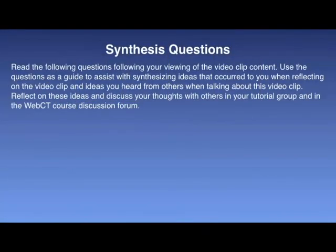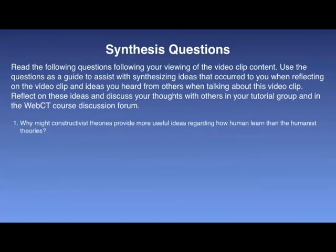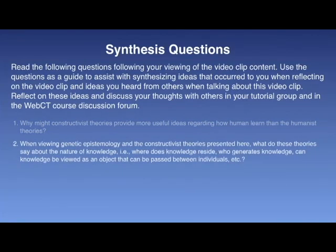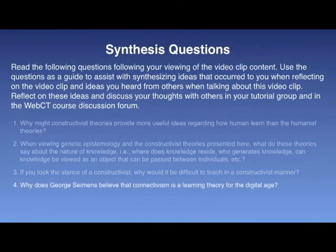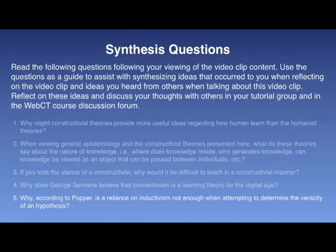Finally, the synthesis questions for this particular clip are as follows. Number one: why might constructivist theories provide more useful ideas regarding how humans learn than the humanist theories? Number two: when viewing genetic epistemology and the constructivist theories presented here, what do these theories say about the nature of knowledge? In other words, where does knowledge reside? Who generates knowledge? Can knowledge be viewed as an object that can be passed between individuals? Number three: if you took the stance of a constructivist, why would it be difficult to teach in a constructivist manner? Number four: why does George Siemens believe that connectivism is a learning theory for the digital age? And number five: why, according to Popper, is a reliance on inductivism not enough when attempting to determine the veracity of a hypothesis?